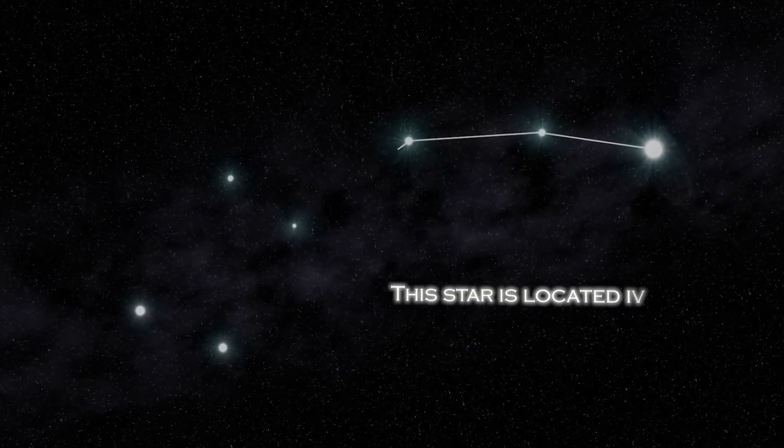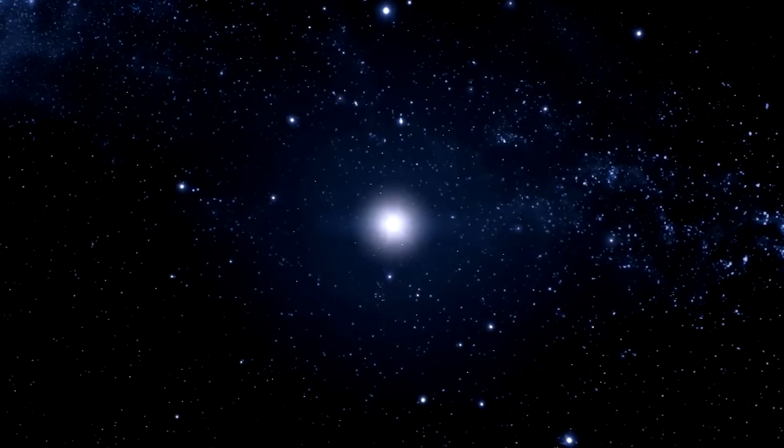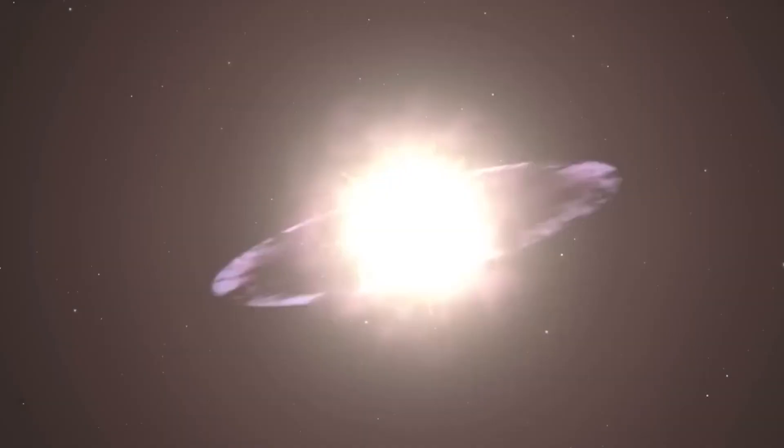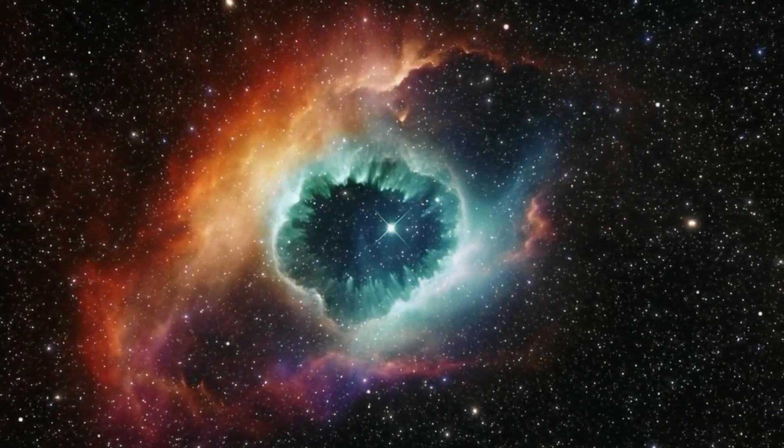The star is located in the constellation Ursa Minor. Polaris is a star of moderate brightness that stands out as a yellow-white supergiant of considerable dimension compared to our Sun.